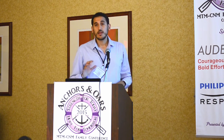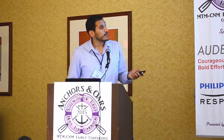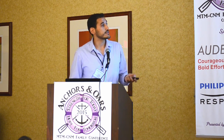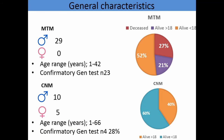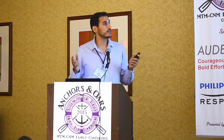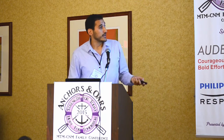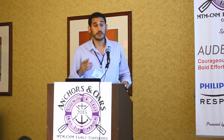For the MTM group, we recruited 29 patients. The age range was between 1 and 42 years old, with confirmatory genetic testing in 23 of these patients. 73% of the patients were alive at the moment of the clinical study. For the central nuclear myopathy group, we recruited 15 patients — 10 of them were male — but I want to highlight that only four of these patients had confirmatory genetic testing. 100% of the central nuclear myopathy patients were alive at the time of the study.